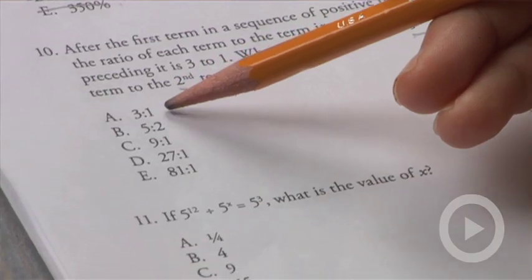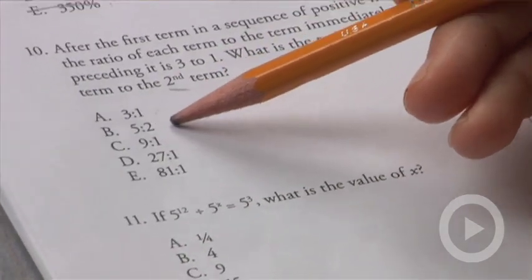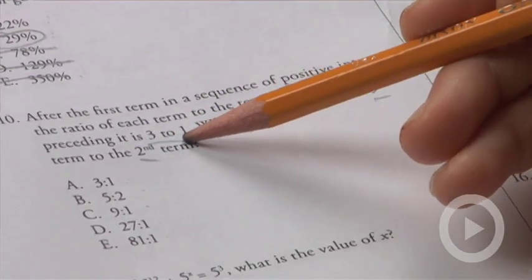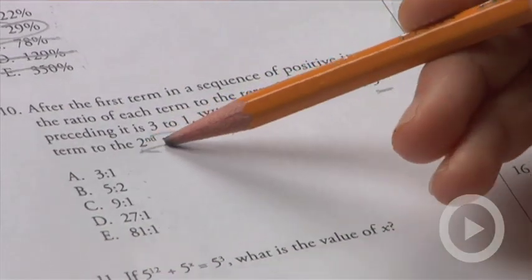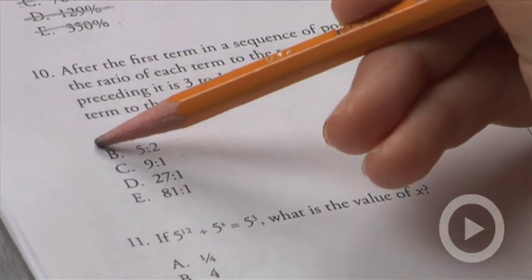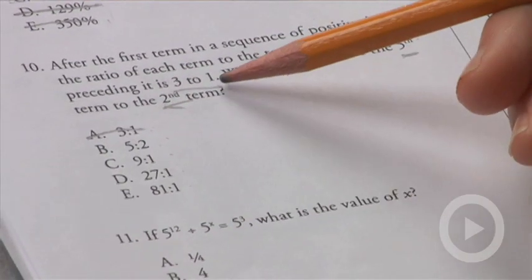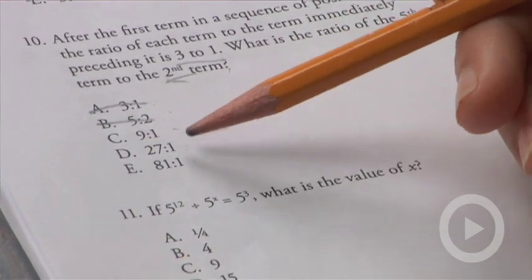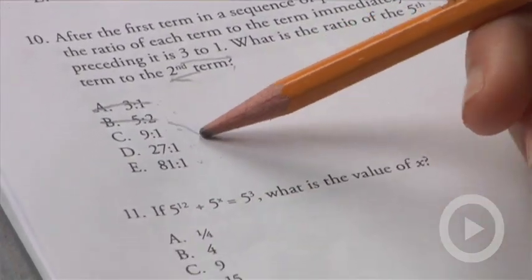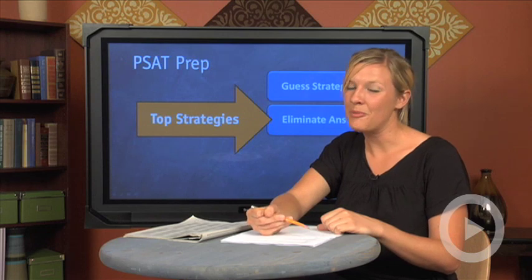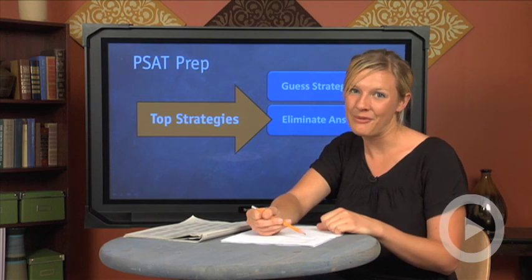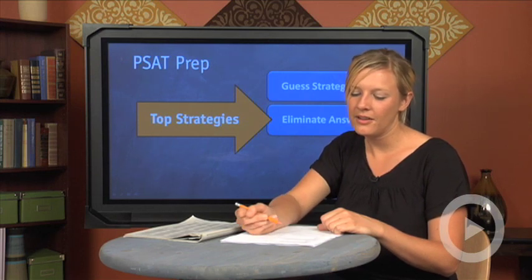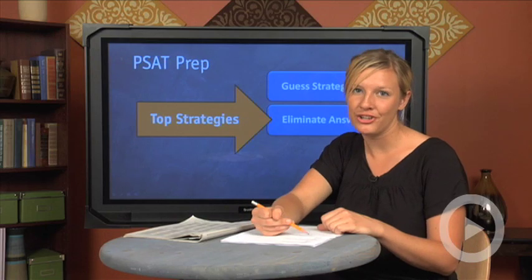Our answer choices are: 3 to 1, 5 to 2, 9 to 1, 27 to 1, and 81 to 1. Since the question already contains 3 to 1 and 5 to 2, we can eliminate answer choices A and B as they repeat numbers from the problem. That leaves us with 9 to 1, 27 to 1, and 81 to 1. Guessing from these three gives a 1 in 3 chance of being correct, which means statistically you'll come out ahead. Let's go with answer choice D — we know we have a pretty good shot.